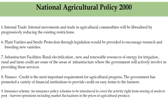The ninth feature is an insurance scheme. An insurance policy scheme is to be introduced to cover agricultural activities. Other areas that have been accorded priority are horticulture crops, livestock species, and aquaculture.